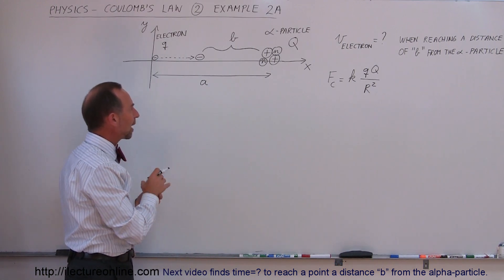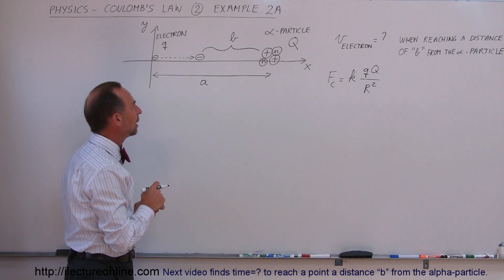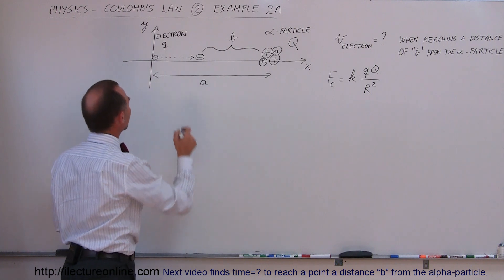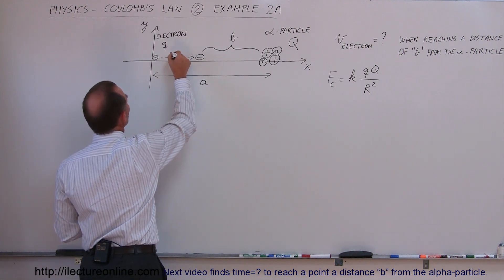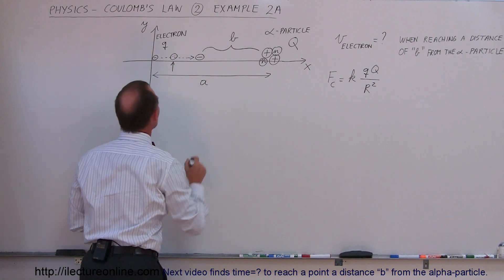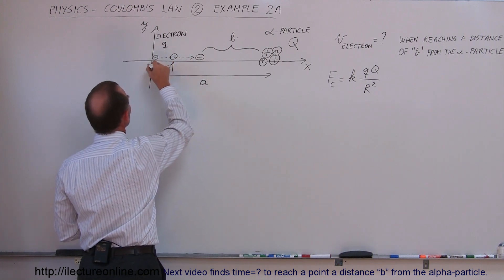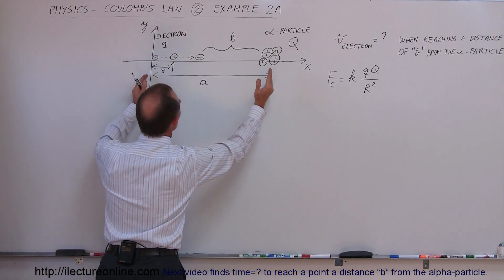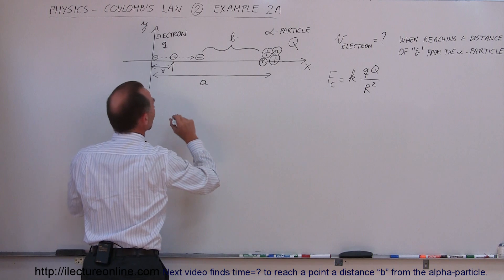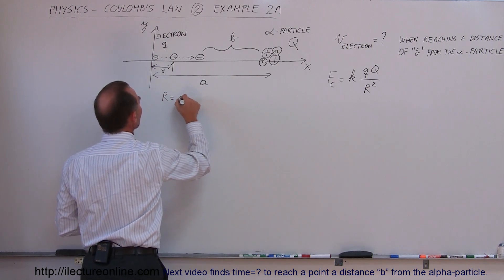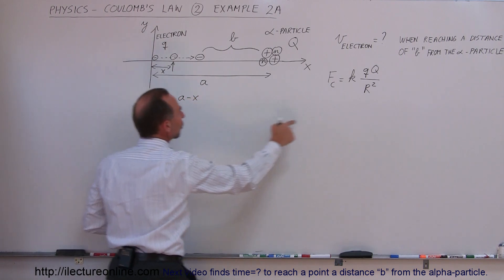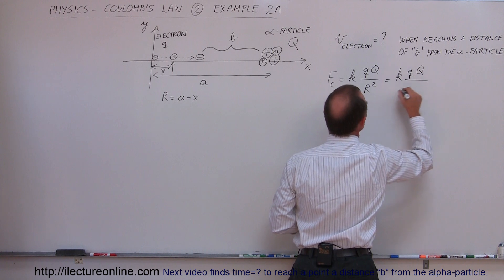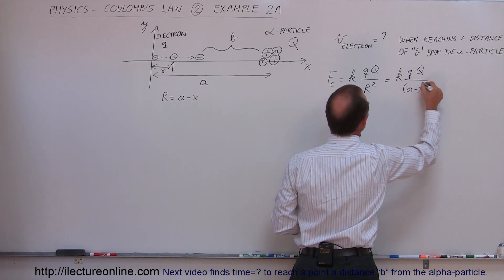We need to describe the distance between the two as a function of x. If the electron is at position x away from the origin, then the distance between the electron and the alpha particle is a minus x. So we substitute r = a minus x, and the force becomes k times q times Q divided by the quantity a minus x squared.